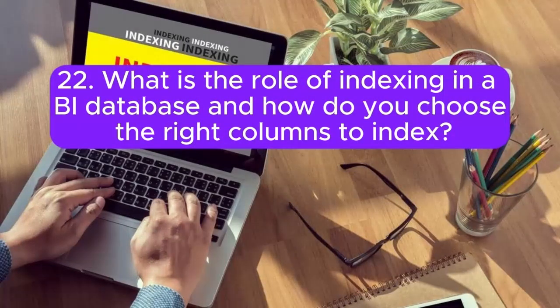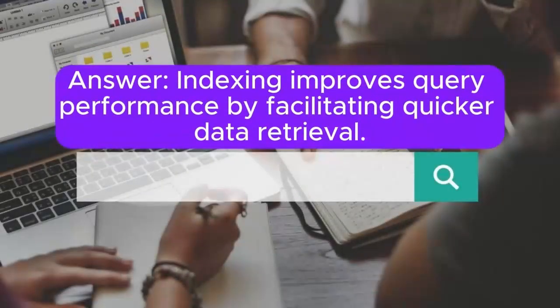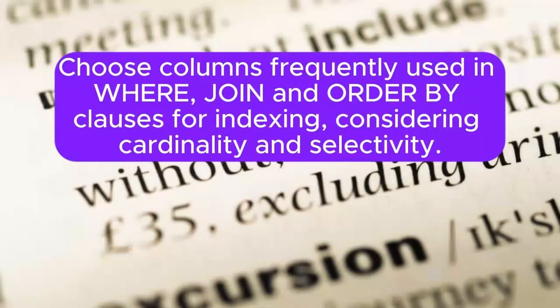Question 22: What is the role of indexing in a BI database, and how do you choose the right columns to index? Answer: Indexing improves query performance by facilitating quicker data retrieval. Choose columns frequently used in WHERE, JOIN, and ORDER BY clauses for indexing, considering cardinality and selectivity.